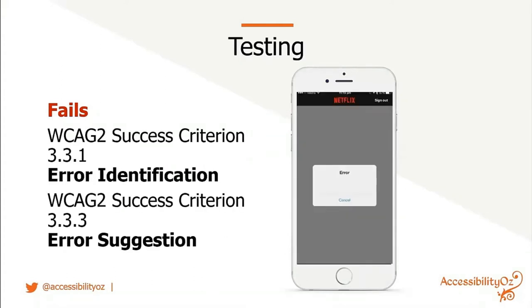This is an example from Netflix. I did a lot of travel before COVID, and occasionally I would get an error on Netflix that just said "error" — and that was it. This fails WCAG 2 success criterion 3.3.1 Error Identification and 3.3.3 Error Suggestion.